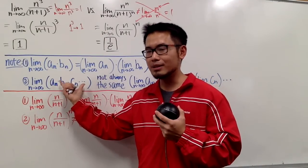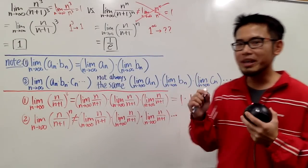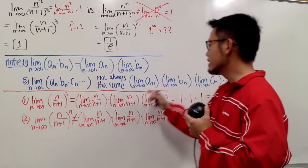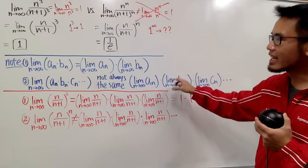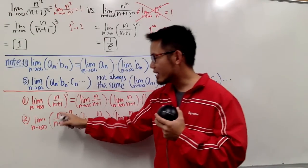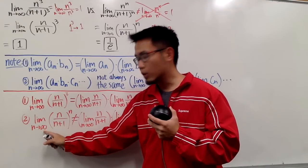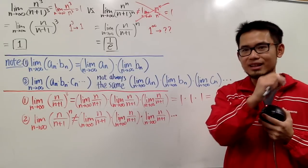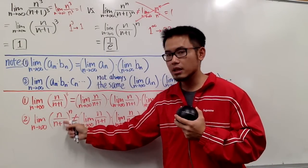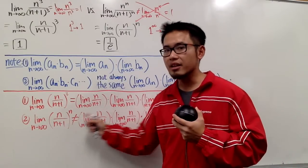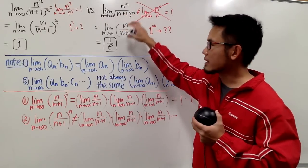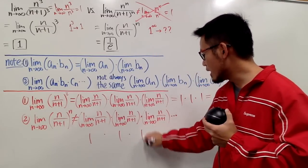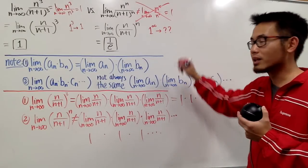However, once we have an infinite number of factors in the product, this rule is not necessarily true. We have to be super careful with infinity. The limit as n→∞ of a_n × b_n × c_n × ... is not the same as the infinite product of individual limits. That's exactly what we saw with the second limit: (n/(n+1))^n has infinitely many factors, each approaching 1, but the result is 1/e — not 1. We cannot say 1^∞ approaches 1 in a limit situation.